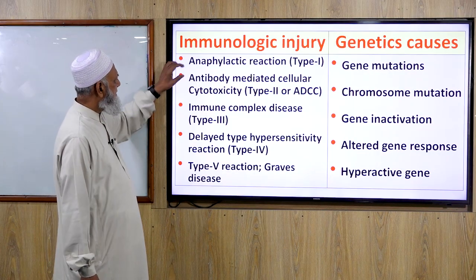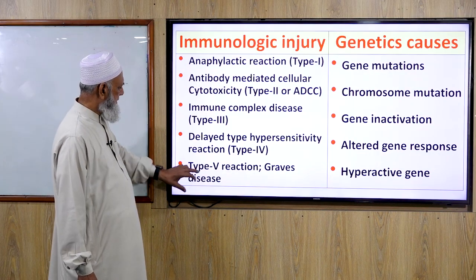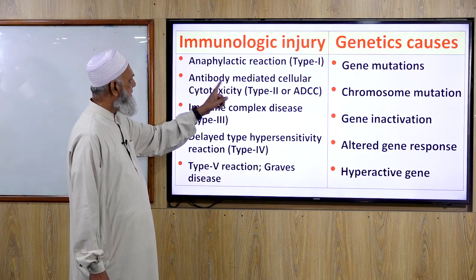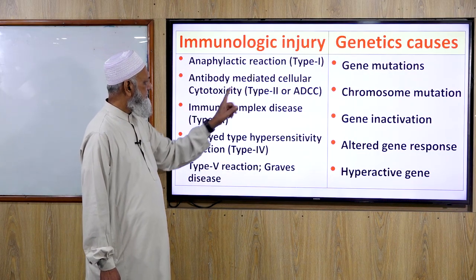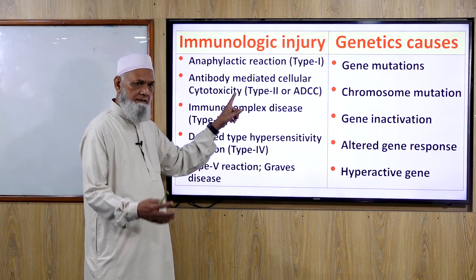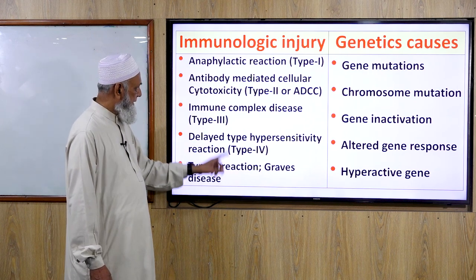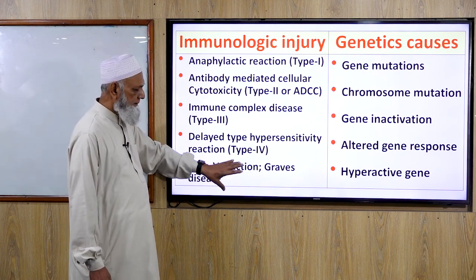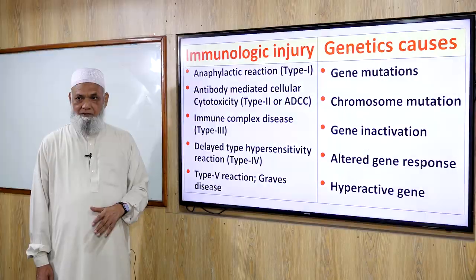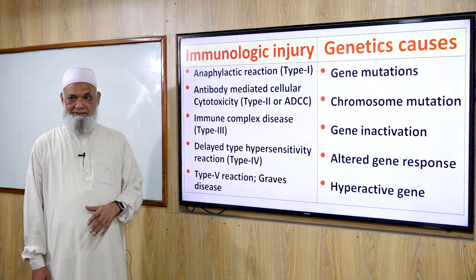Key difference: in type 2, it is antibody-mediated cellular cytotoxicity that destroys the cell. In type 5, the reaction type is similar, but it activates hormone receptors rather than destroying the cell.